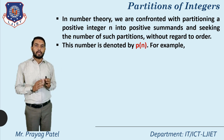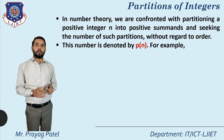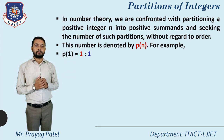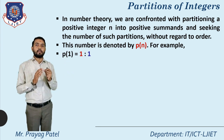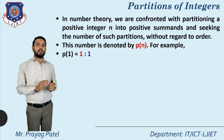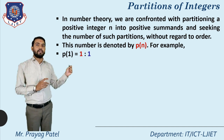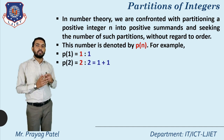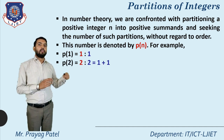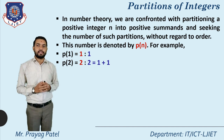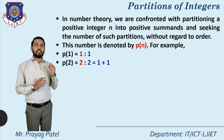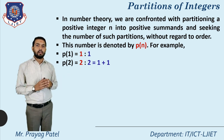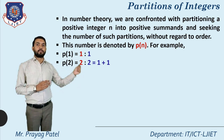The number of partitions is denoted by p(n). For example, p(1) equals 1, meaning the number 1 can be partitioned in only one way: just writing 1. For p(2), the number 2 can be represented in two ways: we write 2, or we write 1 plus 1.